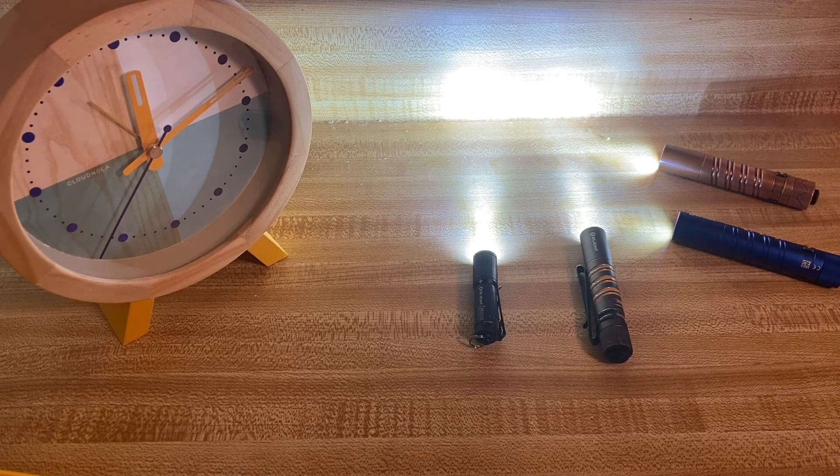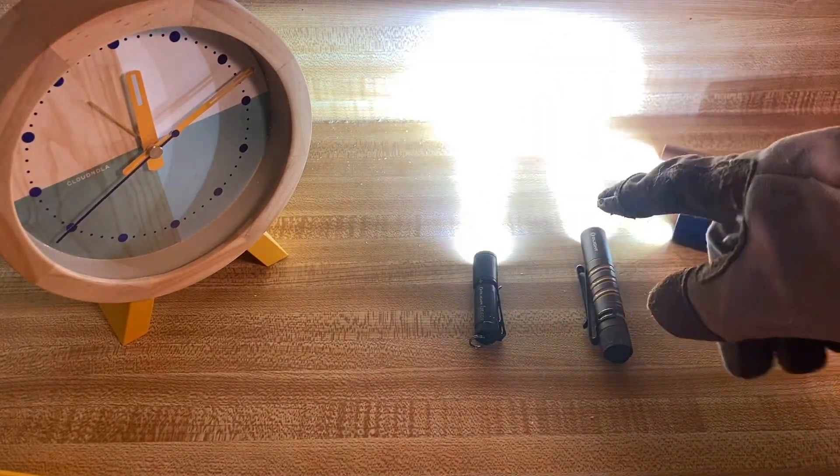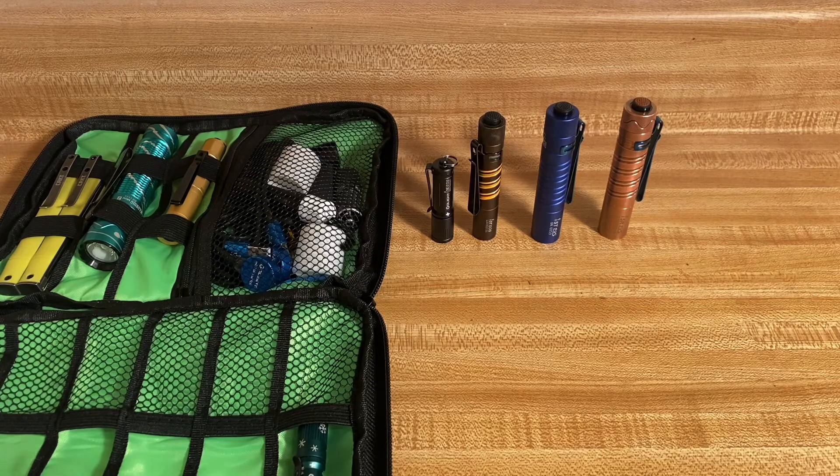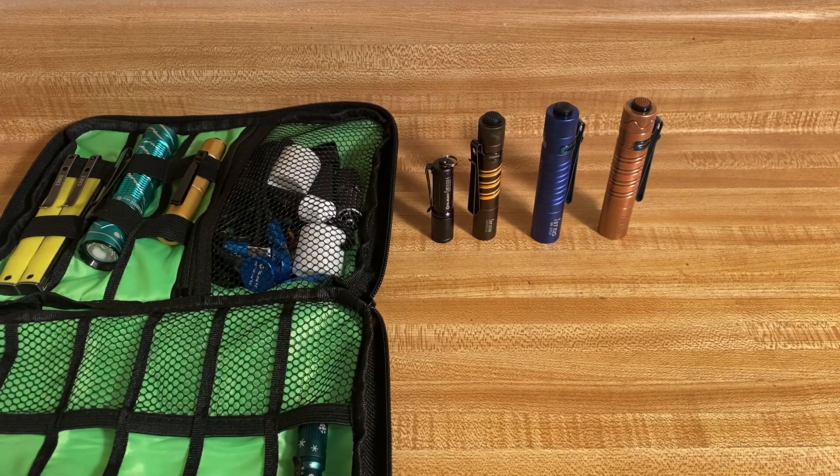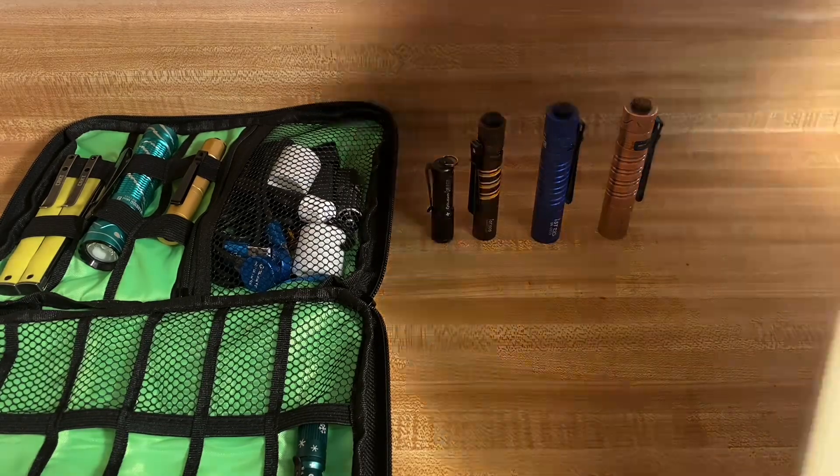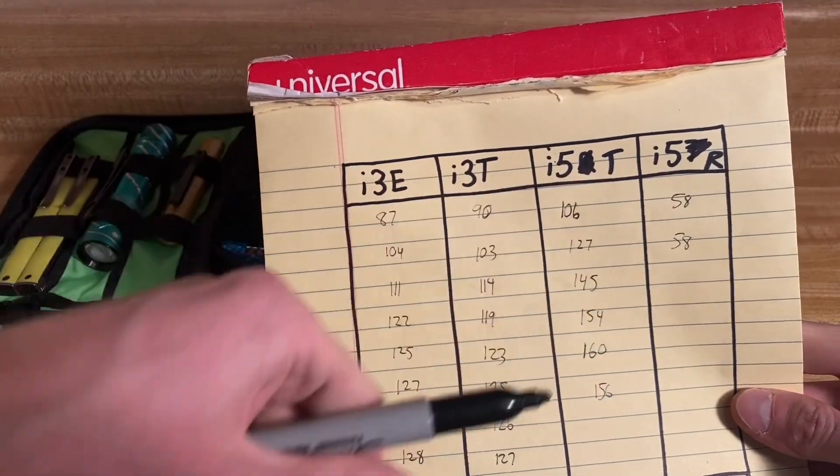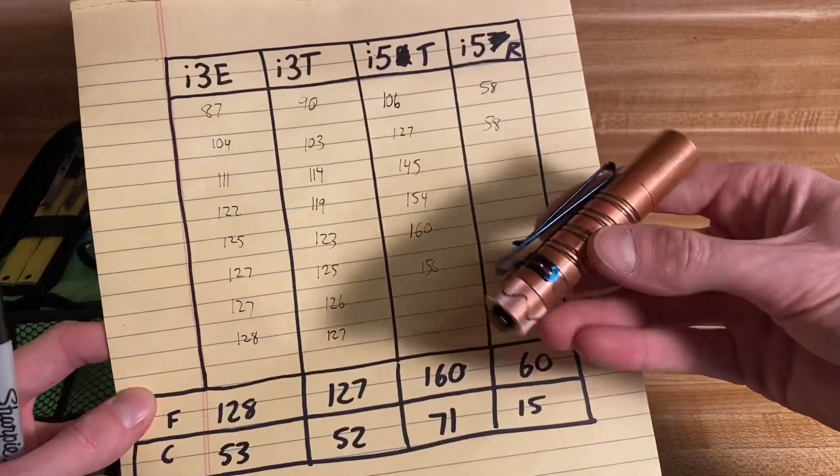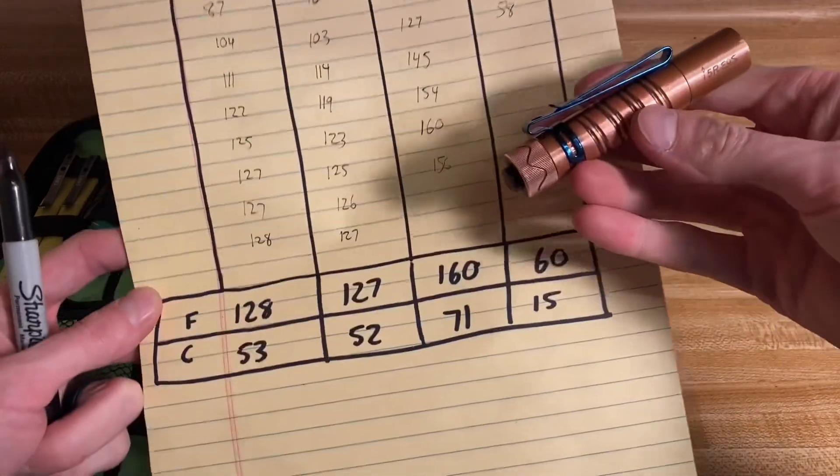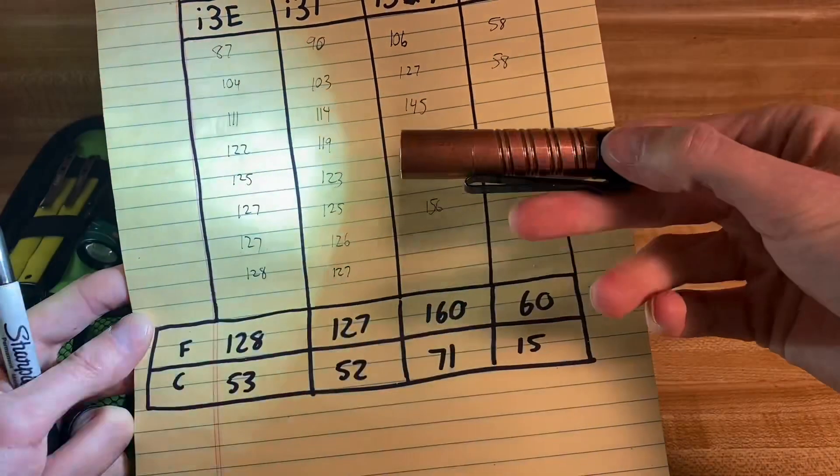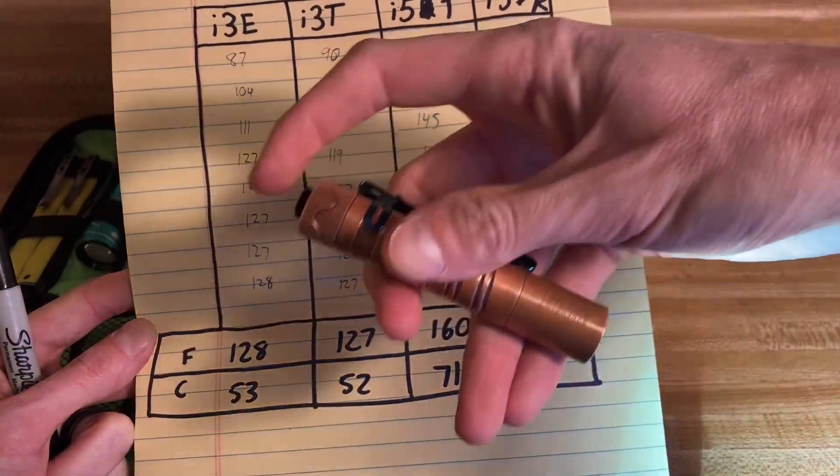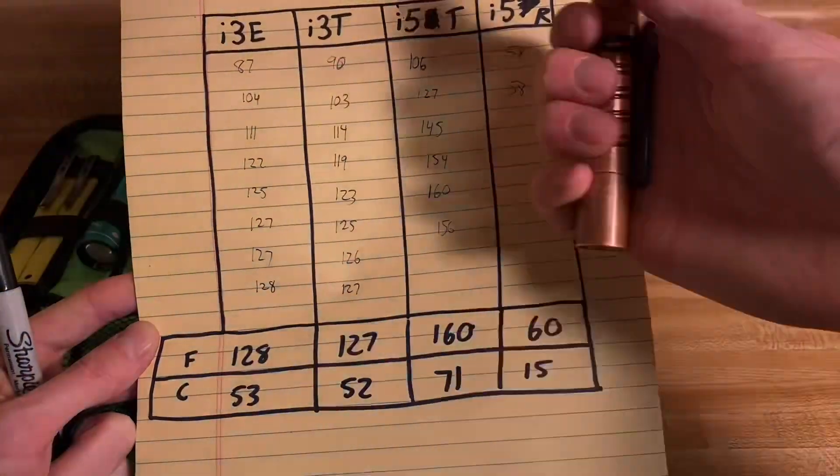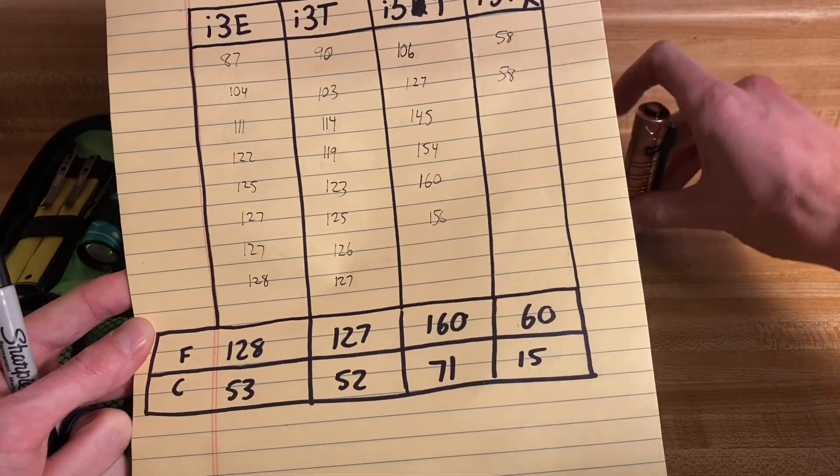Let's go over the top temps we recorded. The i5R remained super cool the entire test. I forgot to take the temp at the very end, but it was 60 degrees Fahrenheit or 15 degrees Celsius. I don't see a point in running a 14500 in the i5R, not because there's a heat issue, just because you don't get a boost in output. You might as well use the included battery because it's USB-C rechargeable and you get great run times.